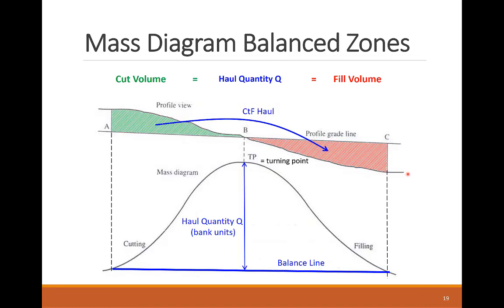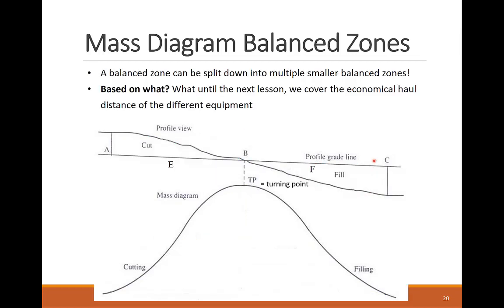And the CTF operation is balanced because the haul quantity, as the height of the mass diagram contained by the balance line, equals the soil cut volume and is used for the fill volume. Interestingly, we can split a balanced zone into smaller sub-zones by drawing more balance lines. Each balanced sub-zone will represent a separate CTF operation with a different characteristic, as we'll see in the next lesson.